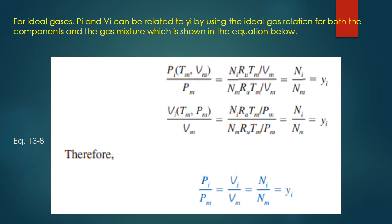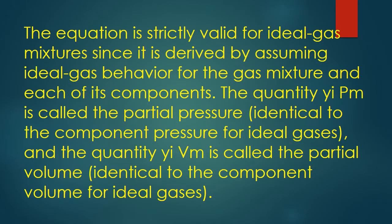For ideal gases, P_I and V_I can be related to the mole fraction Y_I using the ideal gas relation for both the components and the gas mixture. The equation is strictly valid for ideal gas mixtures, as it is derived assuming ideal gas behavior. The quantity Y_I · P_M is called the partial pressure — identical to the component pressure for ideal gases — and Y_I · V_M is called the partial volume, identical to the component volume for ideal gases.